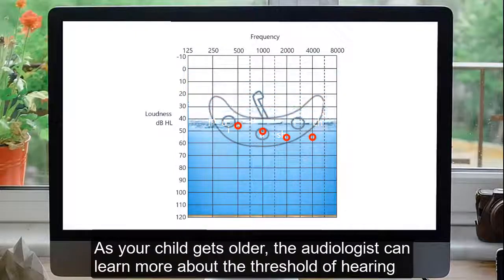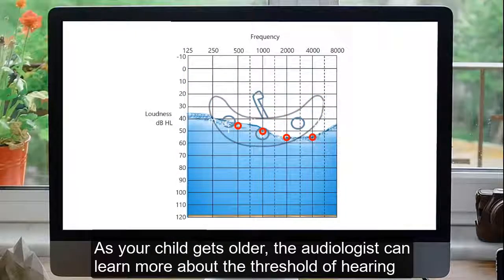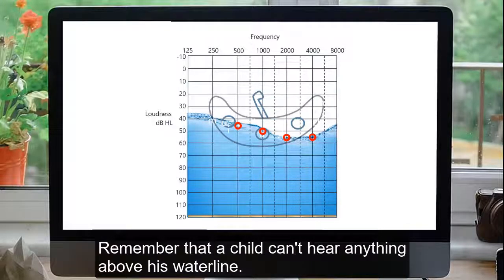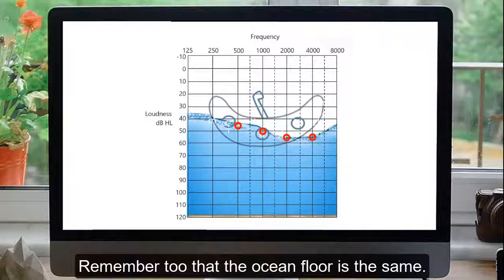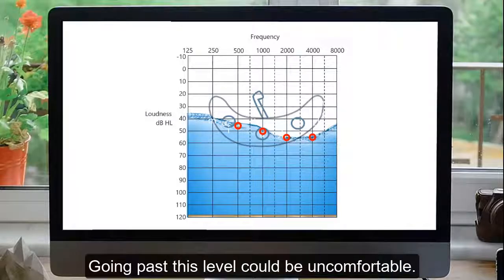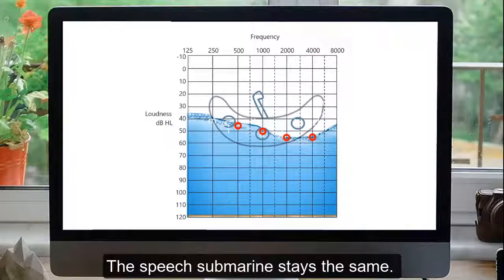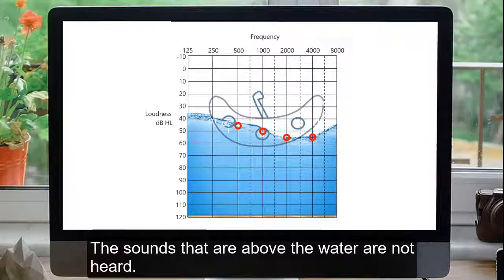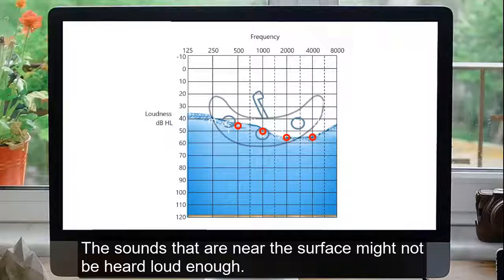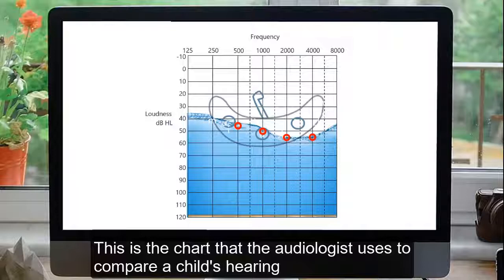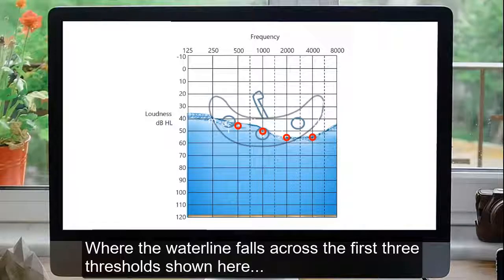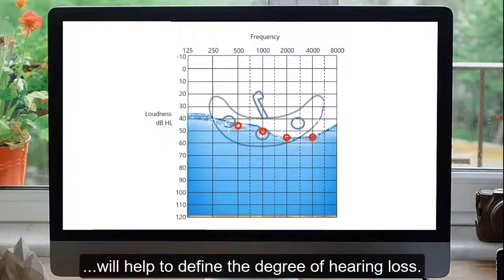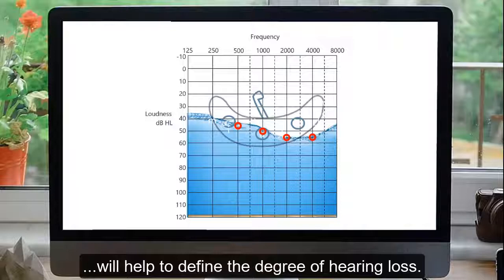As your child gets older, the audiologist can learn more about the thresholds of hearing for each frequency on the audiogram. Remember that a child can't hear anything above his waterline. Remember, too, that the ocean floor is the same. Going past this level could be uncomfortable. The speech submarine stays the same. The sounds that are above the water are not heard. The sounds that are near the surface might not be heard loud enough. This is the chart that the audiologist uses to compare a child's hearing to what most people can hear.